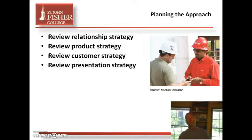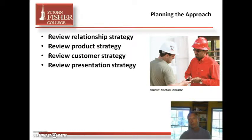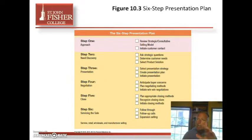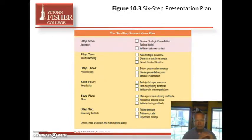When planning the approach, review the relationship strategy, product strategy, and customer strategy — we've covered all those chapters. Then review the presentation strategy. Here's Figure 10.3: a six-step presentation planning approach. Step one is the approach — establishing rapport. Step two is need discovery — understanding the buyer's needs. Step three is the presentation, bearing in mind it may not be to close a sale but to present your company and get another opportunity.